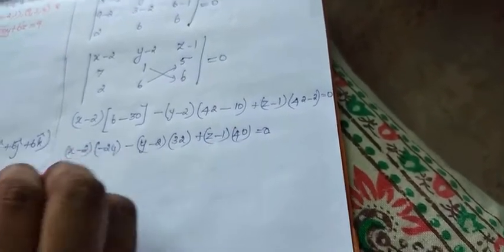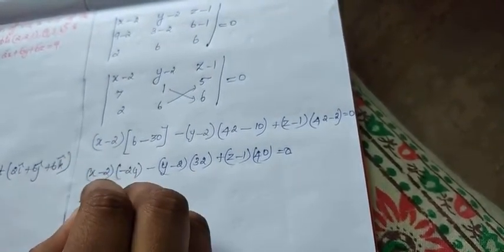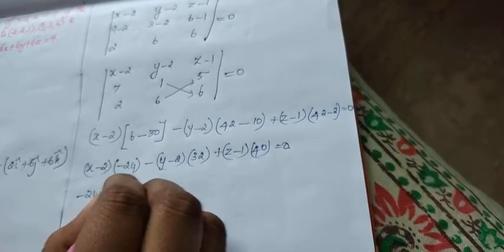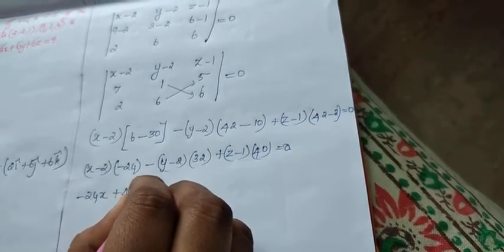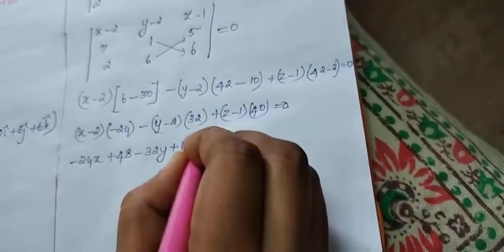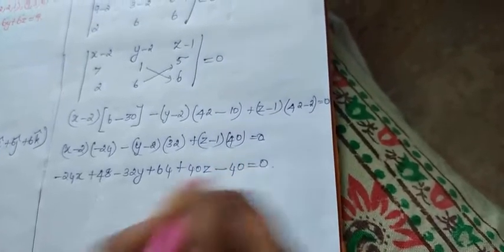Minus (y minus 2) into (42 minus 10 is 32) plus (z minus 1) into (42 minus 2 is 40) equal to 0. Now expand this one inside.